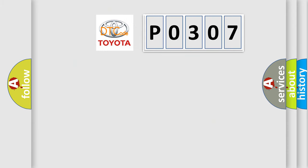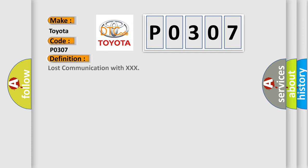So, what does the diagnostic trouble code P0307 interpret specifically for Toyota car manufacturers? The basic definition is lost communication with X, X, X, X, and now this is a short description of this DTC code.